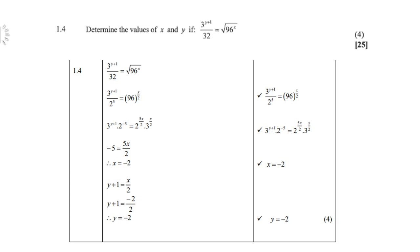Then of course you take 2^5 up because 2^(-5), so now we have the left hand side and the right hand side. So if you compare the 3, the base 3, then y + 1 = x/2. And if you compare the base 2, then -5 = 5x/2. So please take note of that. Then in both cases solve for x and solve for y, so x = -2 and y is also -2.